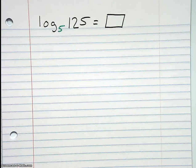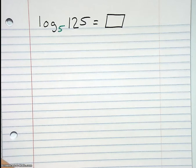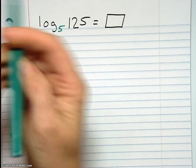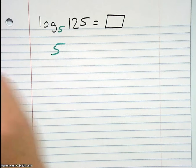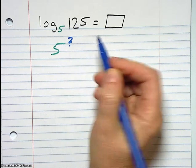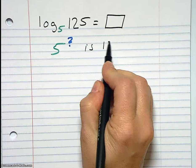All right, here's our next question. I'm going to ask Terrence how to translate this into easier language. Terrence, what is this really asking us? 5 raised to what power is 125? 5 raised to what power, that's a question mark, is 125?